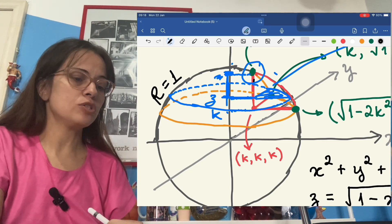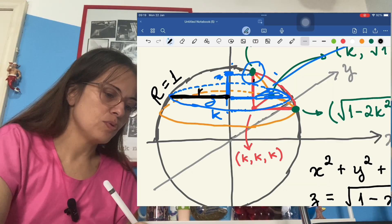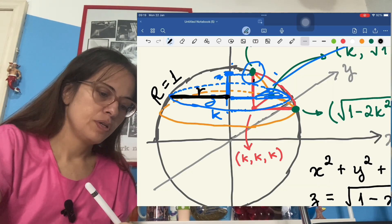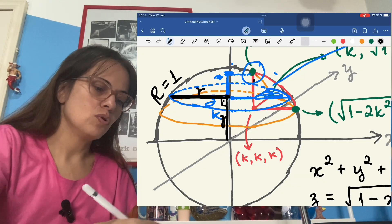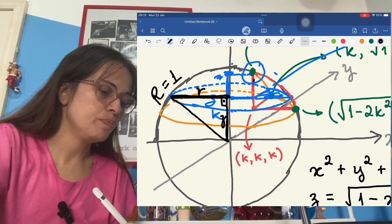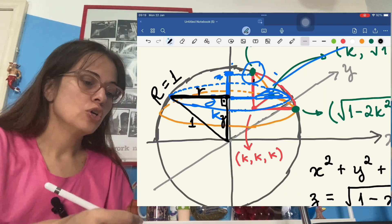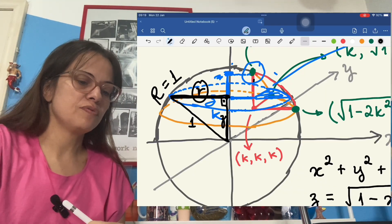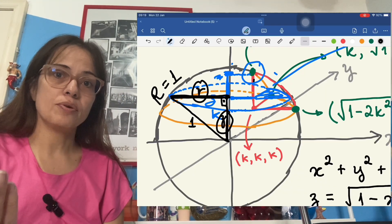This is the little r that we are looking for. This is z. This is a right angle. And this here is the radius of the big sphere, which is one. So to get r in terms of z, all that you need is Pythagoras.